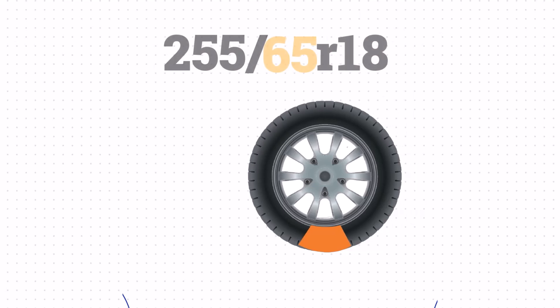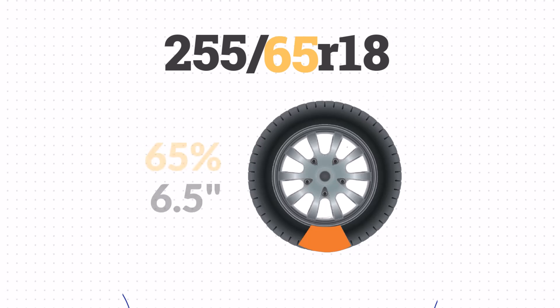Next, we have the 65 as the aspect ratio. This number represents the size of the sidewall compared to the section width. In this case, the 65 means that the sidewall is 65% of the width, which calculates to approximately 6.5 inches.